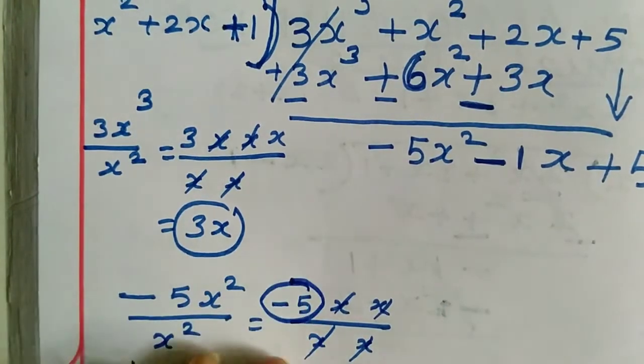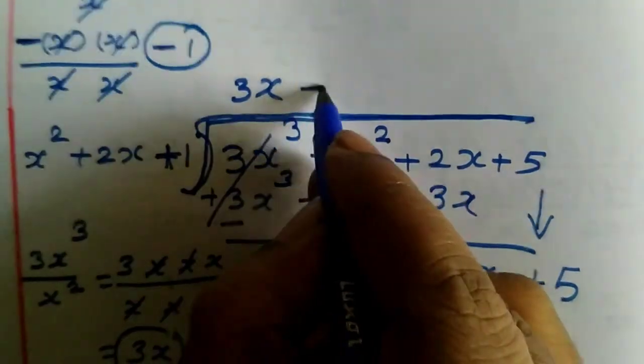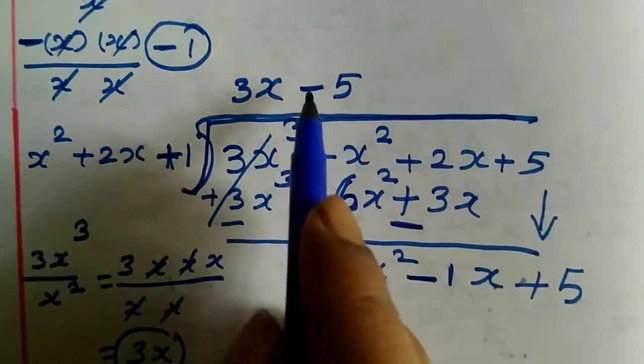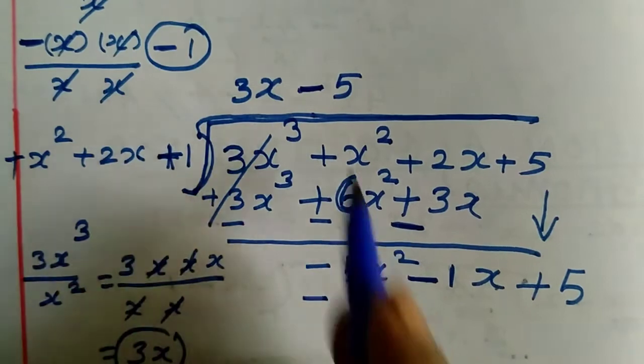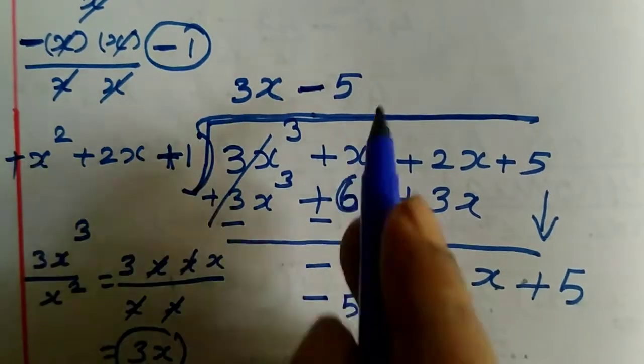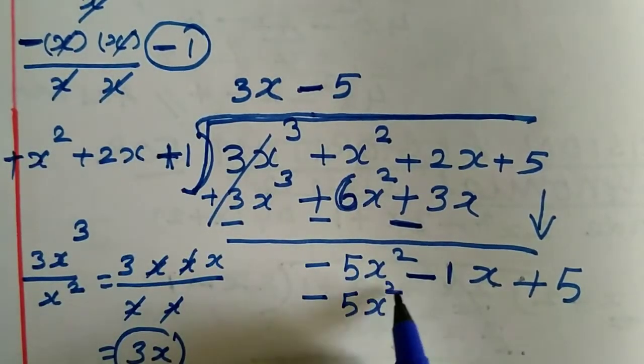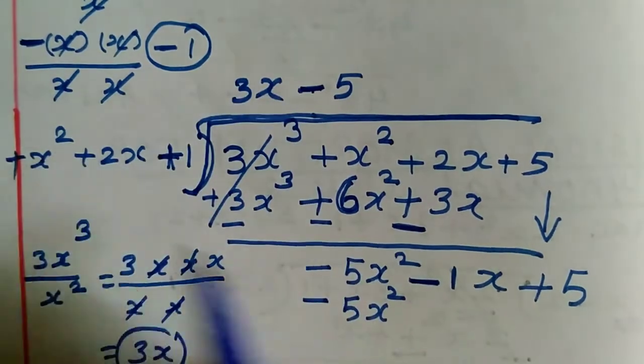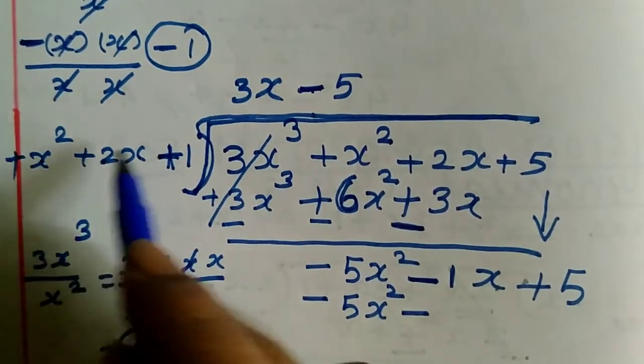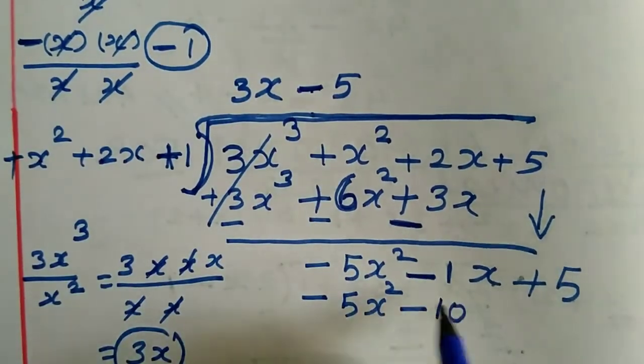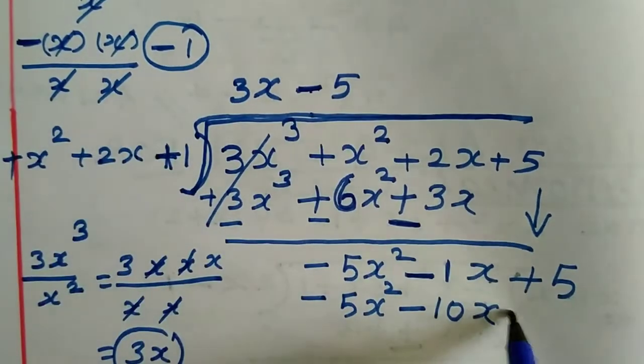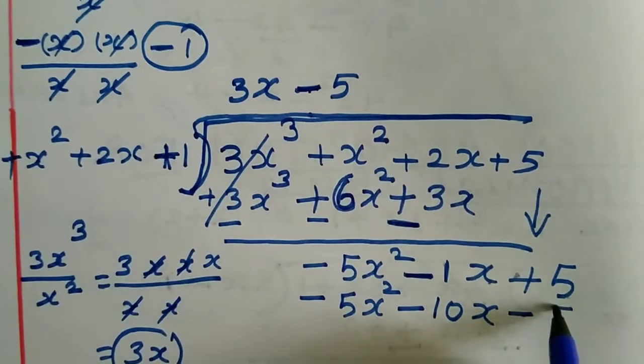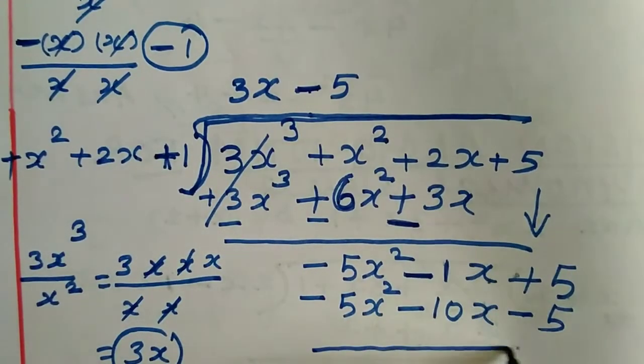Now multiply this term by g(x). -5 times x² is -5x². Plus times minus is minus, -5 times 2 is -10, times x gives -10x. Plus times minus is minus, 1 times -5 is -5. Now change the sign.